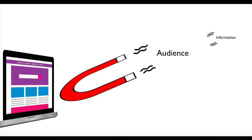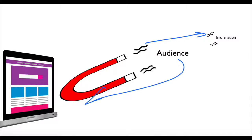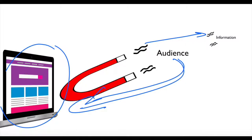Then we looked at whether information is being pushed out or you are drawing the audience towards it. For example, your website is online and you pull the audience to your website, whereas an email newsletter is information that you are pushing to your audience.